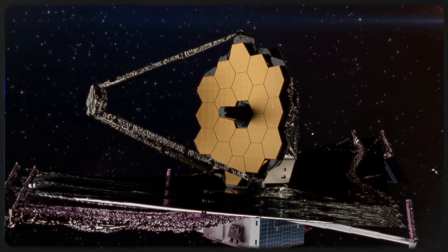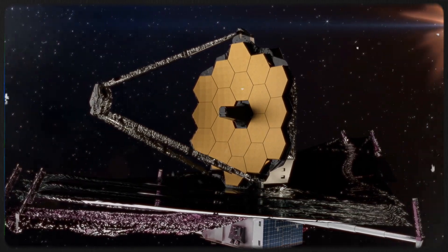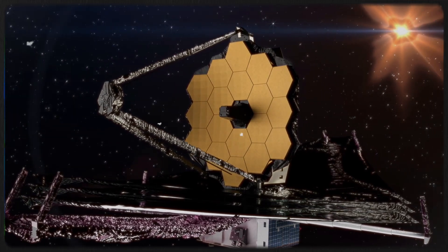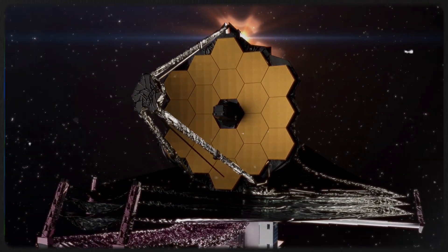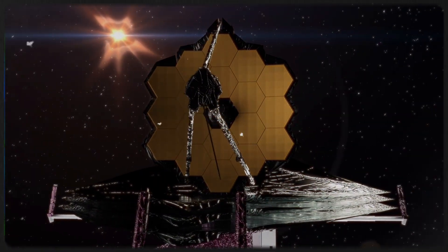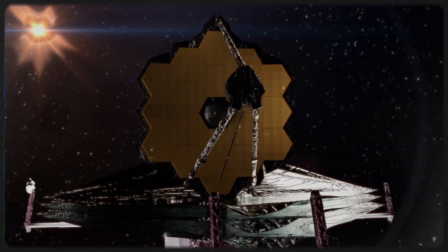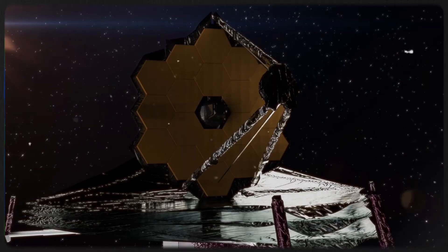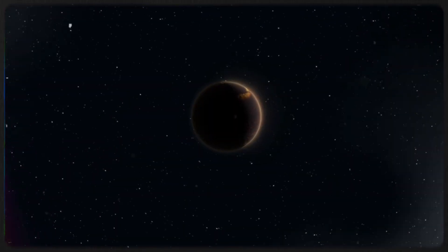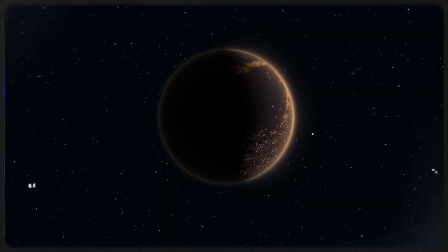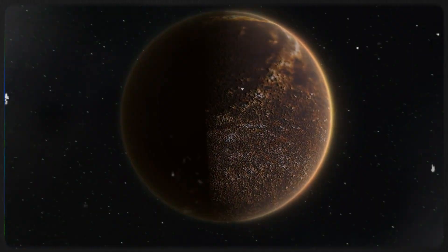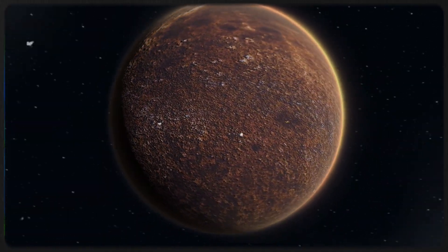Hailed as humanity's most sophisticated observatory, the JWST has recently set its sights on one of the most intriguing exoplanets ever identified, Proxima b. Thanks to JWST's unprecedented capabilities, we are uncovering details that were once beyond our reach, and the findings are nothing short of extraordinary.